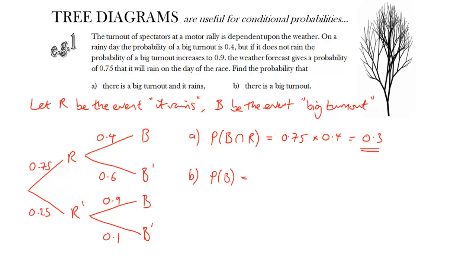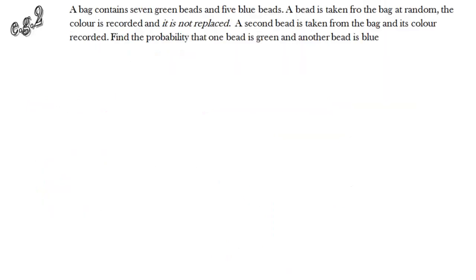The second one, the probability that there's a big turnout. Well there's two ways to get that. Either there's a big turnout and it rains, or there's a big turnout and it doesn't rain. And that means two routes along my tree diagram. The first one we worked out in part A. The second one, multiply along the two corresponding branches. So 0.25 is the probability that it doesn't rain. Multiply that by 0.9, the probability that there is then a big turnout. And add those all up together, that gives us our answer.